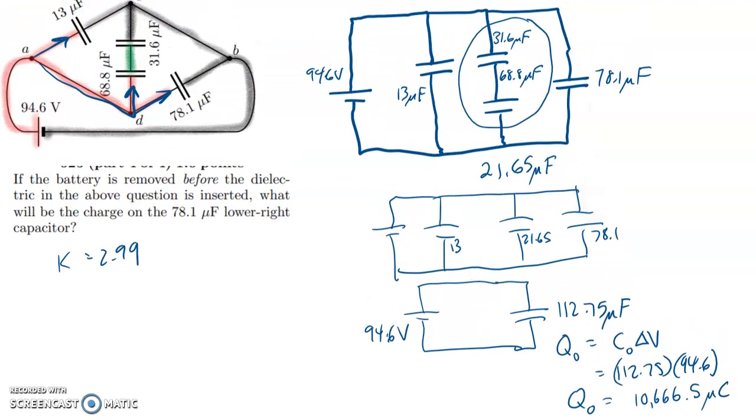So that means that our kappa value is 2.99. And it's going into this 68.8 microfarad capacitor here. So the new capacitance is just kappa times the old capacitance. So 2.99 times 68.8. Let's see what that gives us. 2.99 times 68.8 is 205.712 microfarads. That is the new capacitance.